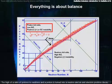Too high a ratio of protons to neutrons, and a proton is turned into a neutron and an anti-electron, positron decay.